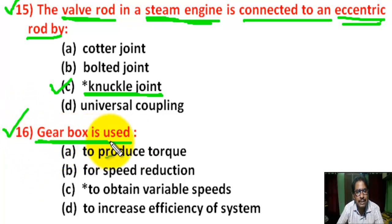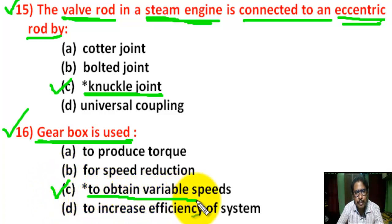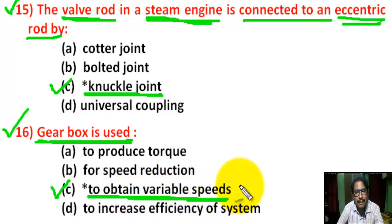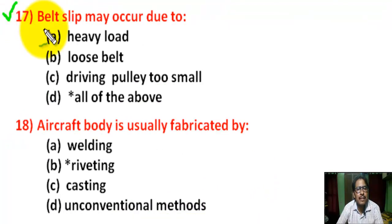Question number 16: a gearbox is used — there are 4 options. Correct answer is C: To obtain variable speed.